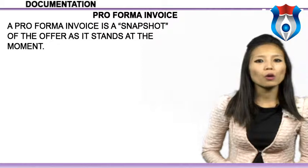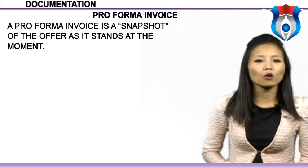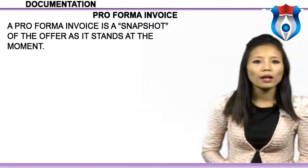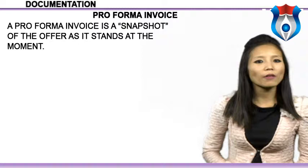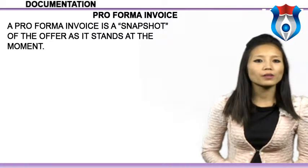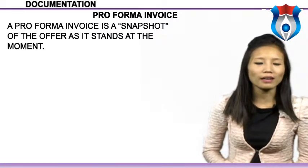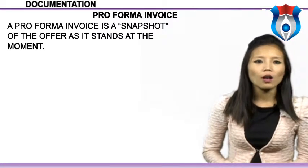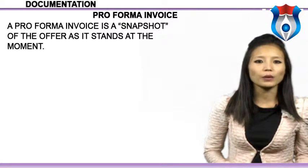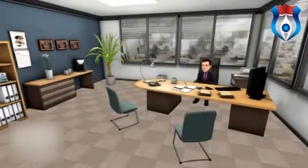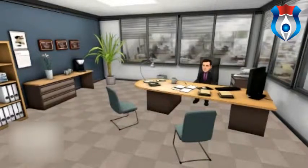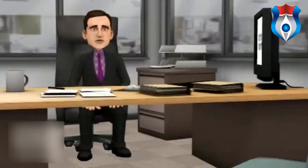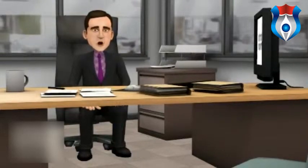A Pro Forma Invoice is a snapshot of the offer as it stands at the moment. The seller should carefully develop the quote, because once the buyer accepts the offer to sell at a certain price, a formal contract for that exact amount exists. A Pro Forma Invoice is a preliminary bill of sale sent to buyers in advance of a shipment or delivery of goods. Typically, it gives a description of the purchased items and notes the cost.